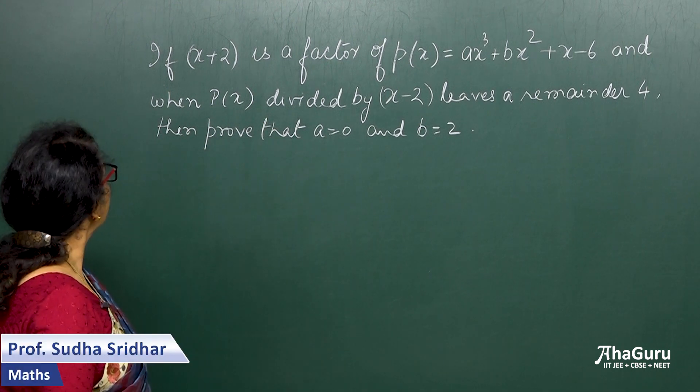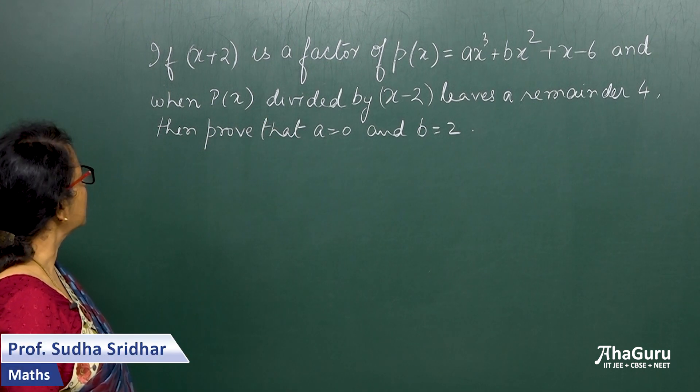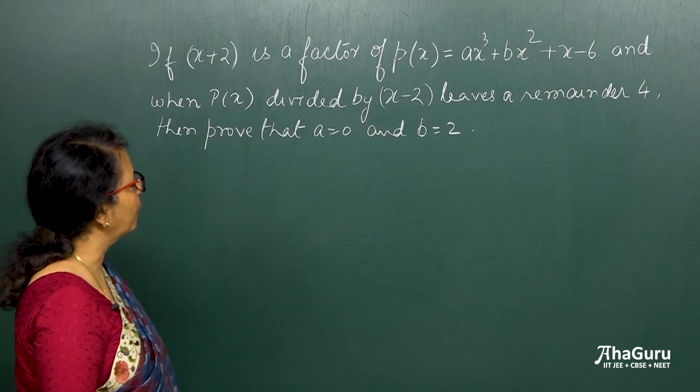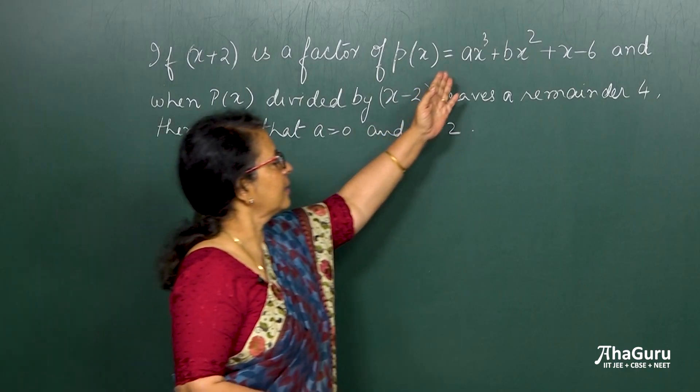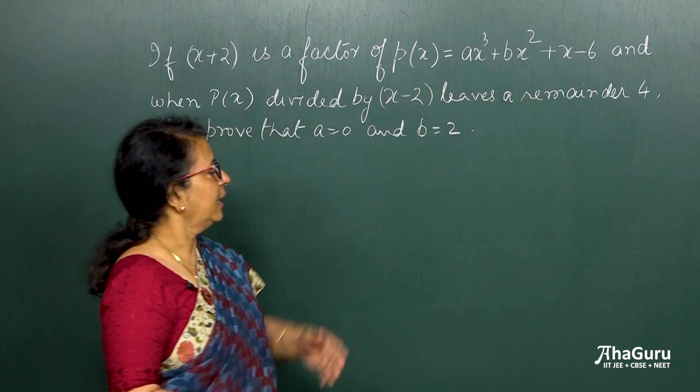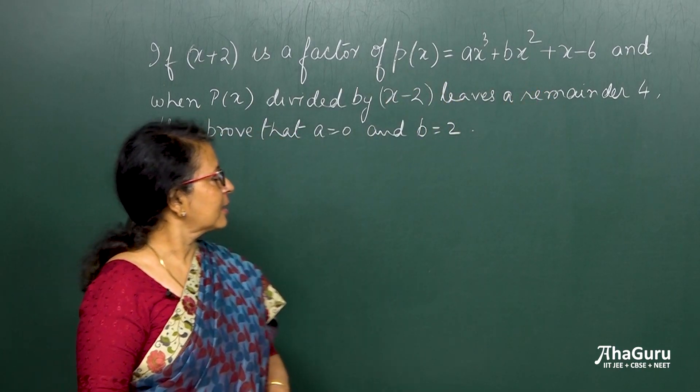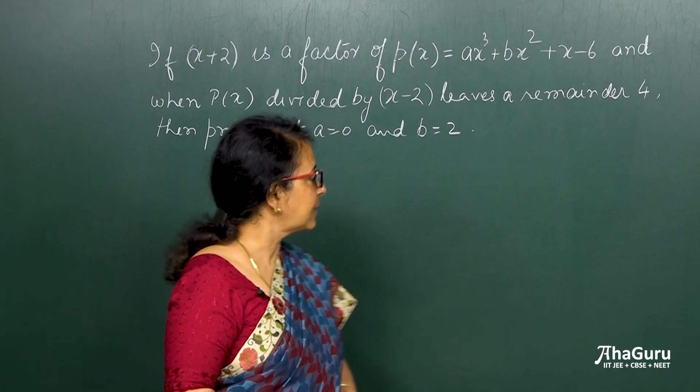Let us see what this problem says. If x plus 2 is a factor of P(x), which is a polynomial of some kind, here we see it is a cubic polynomial which is ax cube plus bx square plus x minus 6.